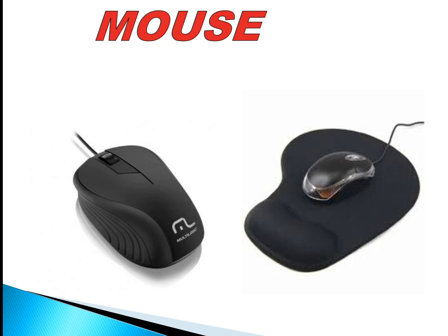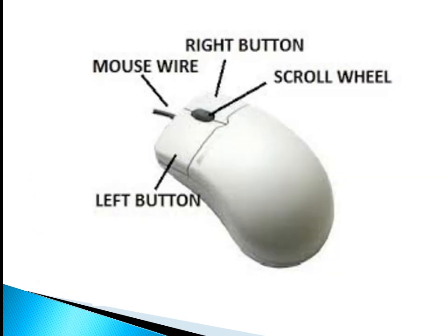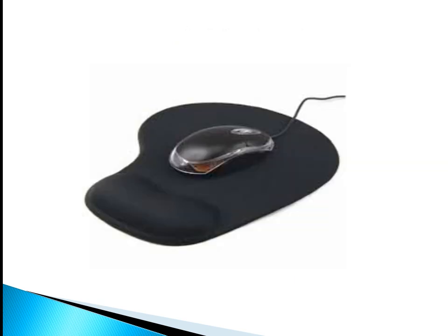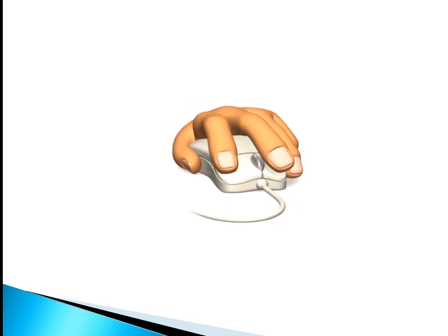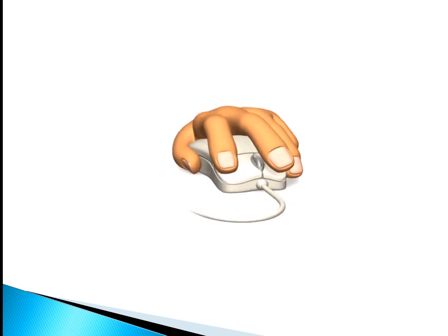Mouse — a mouse may have two or three buttons. It is always kept on a mouse pad. A mouse is used for selecting or pointing towards the icon displayed on the screen or monitor.